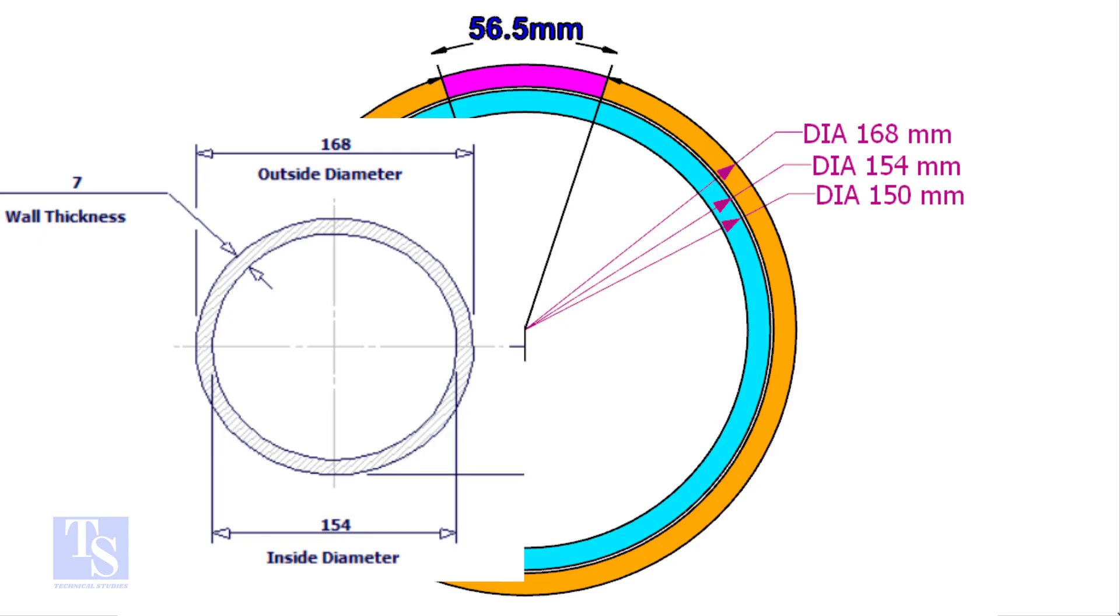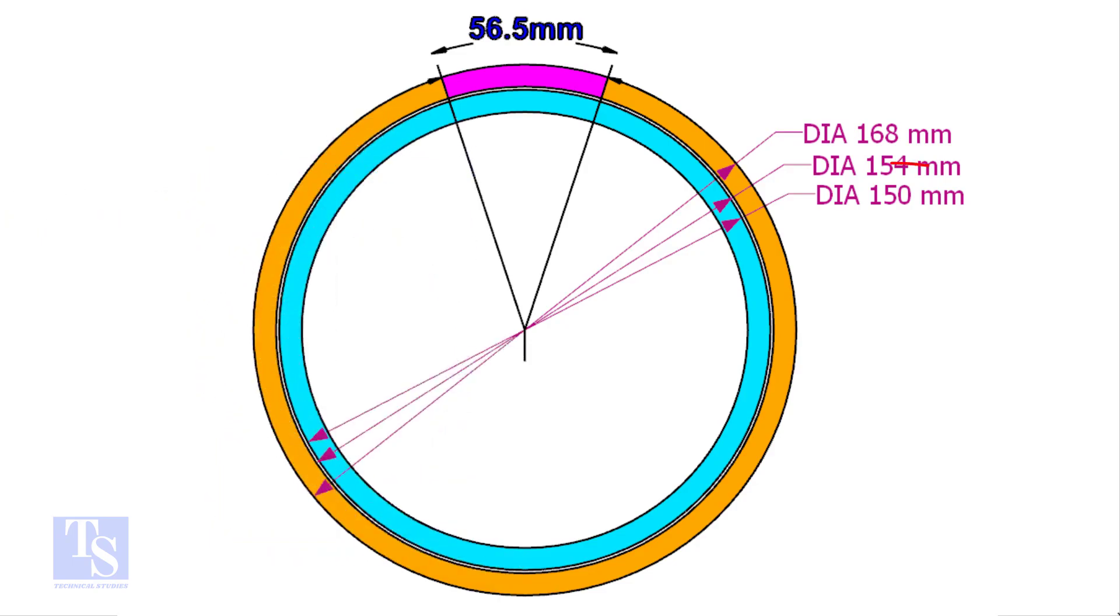The ID of a 6 inch 40 schedule pipe is 154mm. The OD of the clamp shall be 4 to 5mm less than the pipe ID. This clamp OD is 4mm smaller than the ID of the 6 inch pipe.